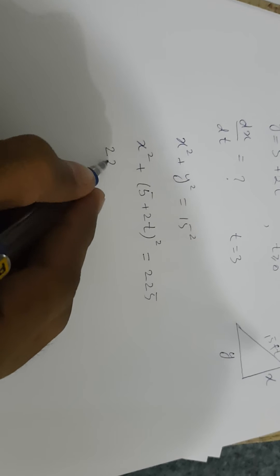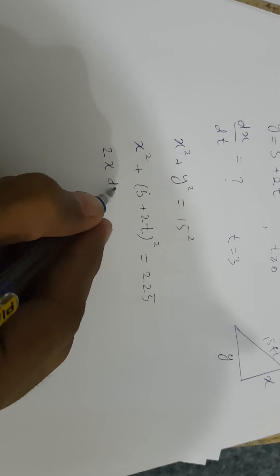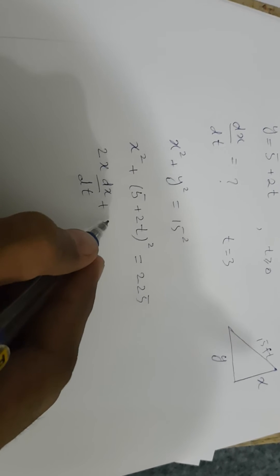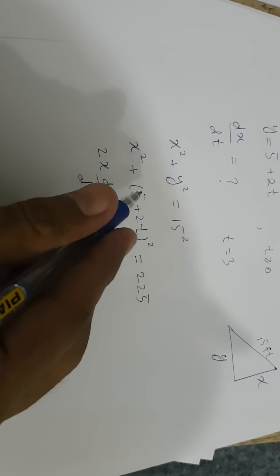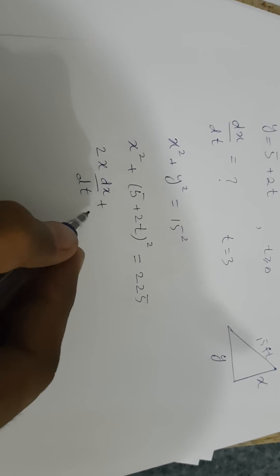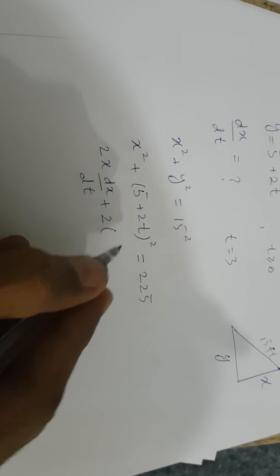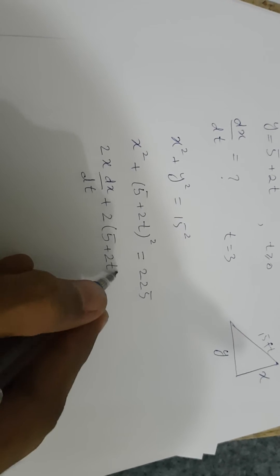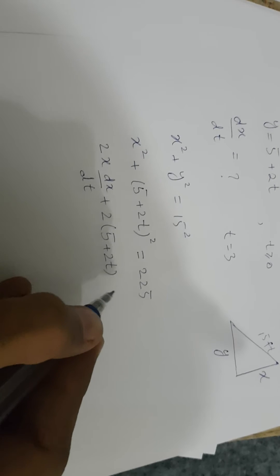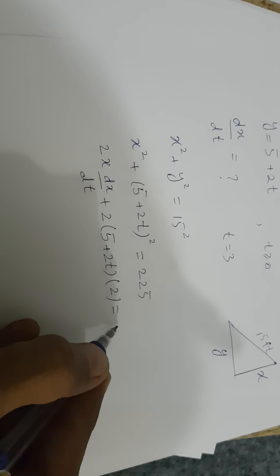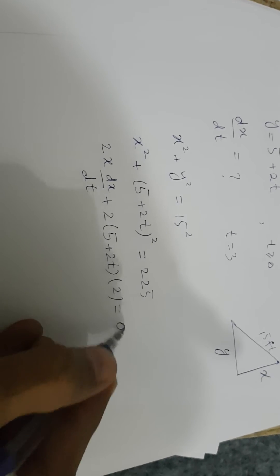After differentiating both sides with respect to t, we have 2x(dx/dt) plus, by using the power rule, 2(5 + 2t)^(2-1) times the derivative of (5 + 2t), which is 2. The derivative of 225 is 0.